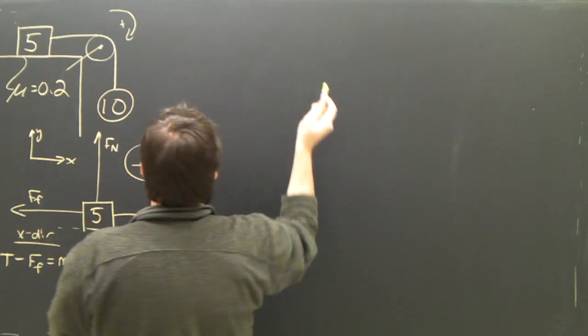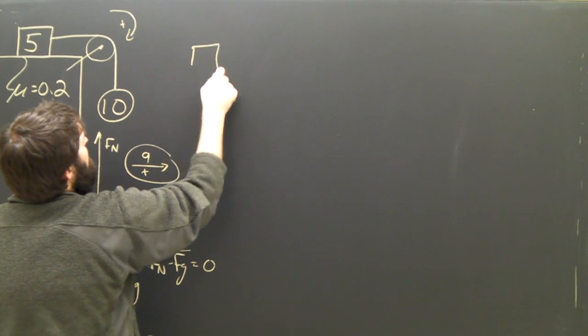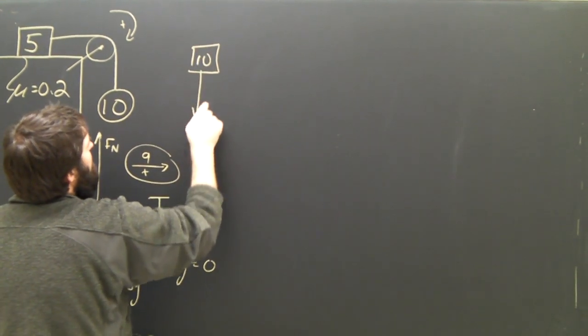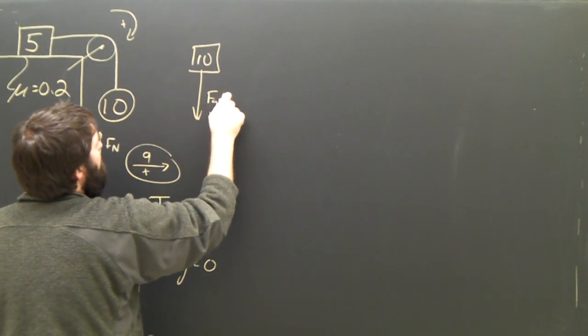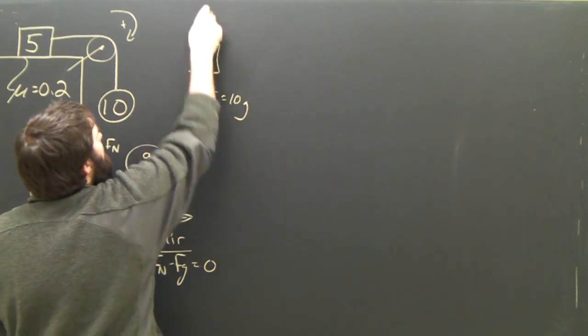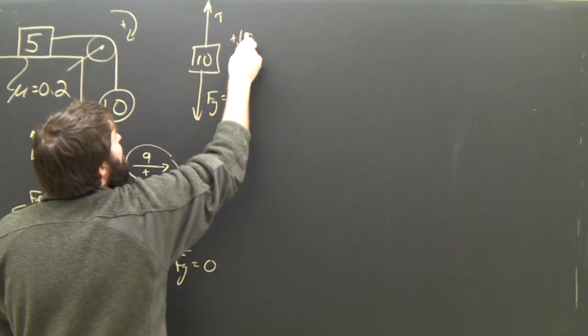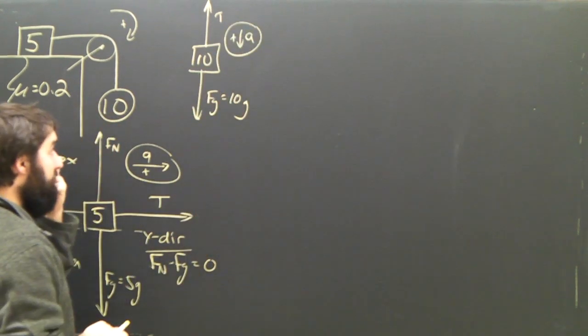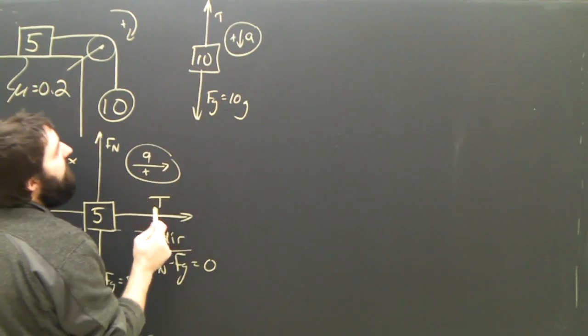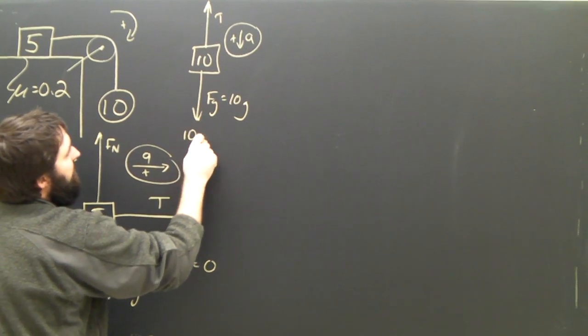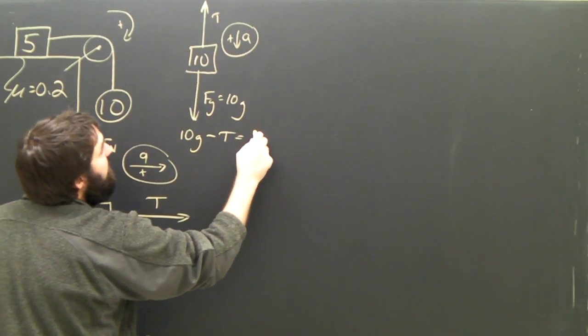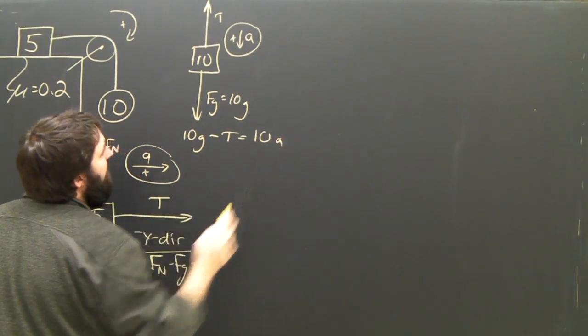Second mass, the 10kg object, is just like before. There is only the force of gravity, which is 10g, and the tension. And this will be accelerating down. So Newton's second law for this object tells me that 10g minus T equals 10a.